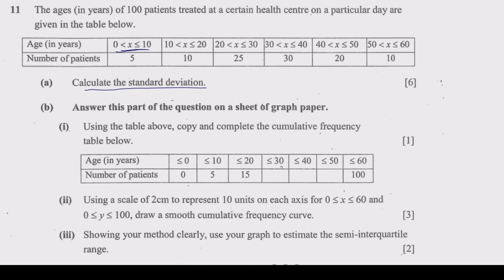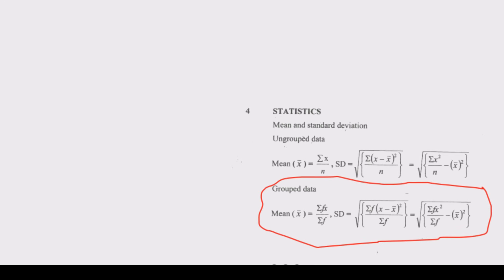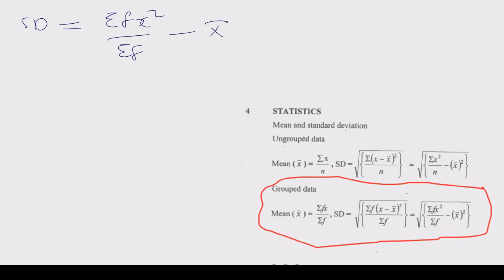When dealing with grouped data, on the second page of the question paper you'll find the formula: standard deviation equals the square root of the summation of frequency multiplied by x squared, divided by the summation of frequency, then minus the mean squared. Take the square root of that entire expression to get the standard deviation.